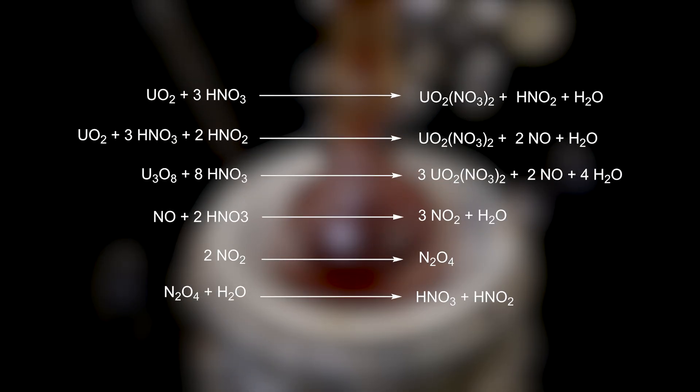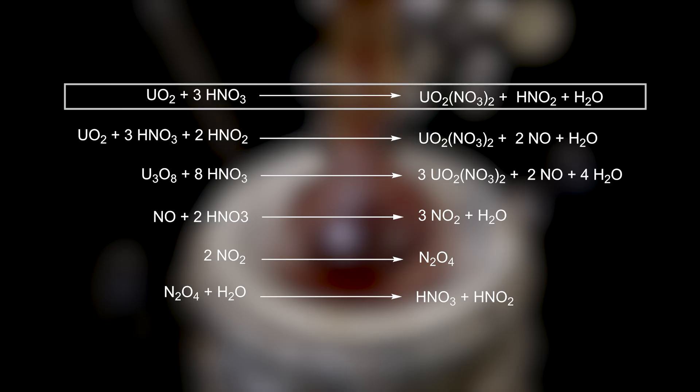In the reaction, uranium dioxide reacts with nitric acid to produce uranyl nitrate in a large variety of reactions. This reaction is said to be autocatalytic, meaning one of the products that is produced in the reaction also accelerates it. It is thought to be dissolved nitrogen oxides that increase the reaction rate, but it is not known which one exactly and how it works. From top to bottom, uranium dioxide can react with nitric acid to produce uranyl nitrate, nitrous acid, and water.